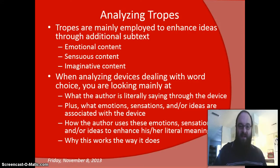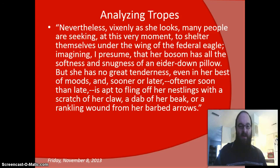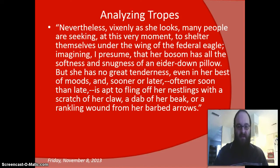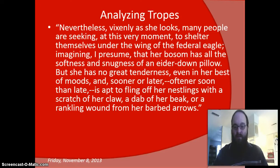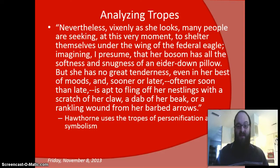Let's look at an example of a trope I identified in Hawthorne's Custom House — I only had to turn to the second page before I found one I really liked. This is Hawthorne's first description of the Custom House: 'Vixenly as she looks, many people are seeking at this very moment to shelter themselves under the wing of the Federal Eagle, imagining that her bosom has all the softness and snugness of an Eiderdown pillow. But she has no great tenderness, even in her best of moods, and sooner or later is apt to fling off her nestlings with a scratch of her claw, a dab of her beak, or a rankling wound from her barbed arrows.' Hawthorne uses the tropes of personification and symbolism with the eagle.